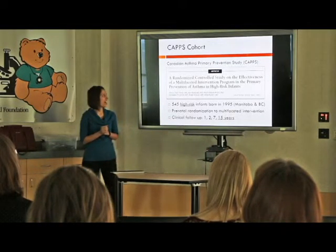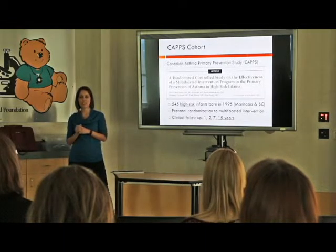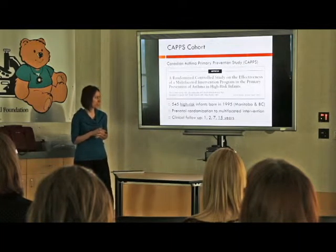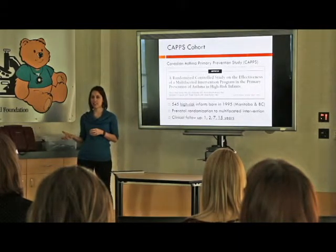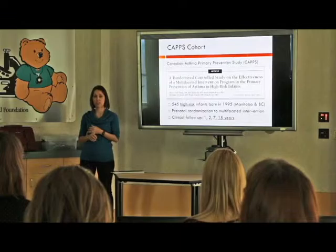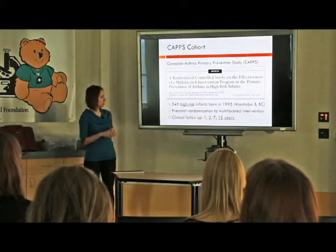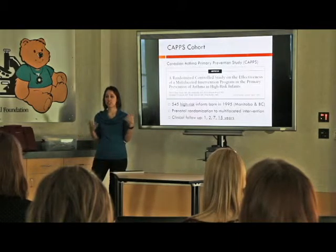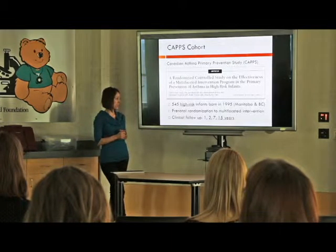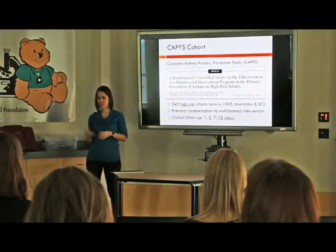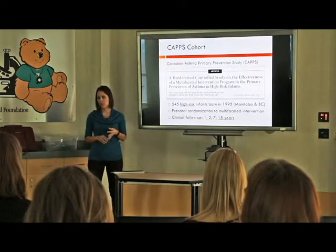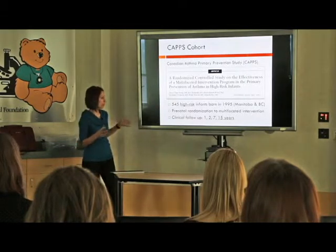To answer these questions we used the Canadian Asthma Primary Prevention Study, or CAPS, cohort — a cohort of 545 high-risk infants born in 1995, about half in Manitoba and half at the University of British Columbia. They were high-risk, meaning they had a first-degree relative with allergy or asthma. Pregnant women were recruited during pregnancy and randomized to an intervention aiming to prevent asthma development. The intervention involved things like avoiding tobacco smoke in the home and breastfeeding as long as possible.